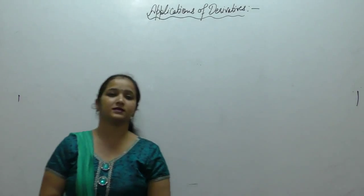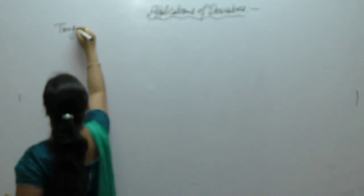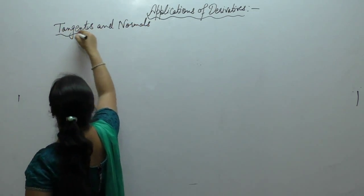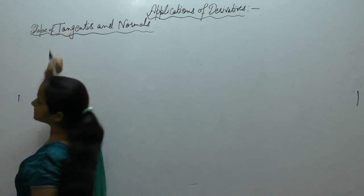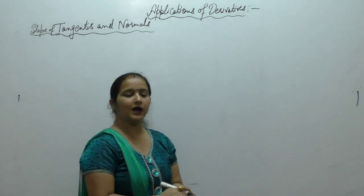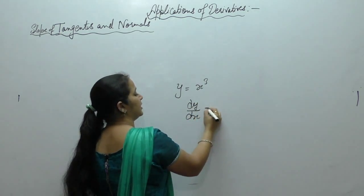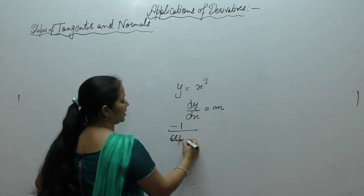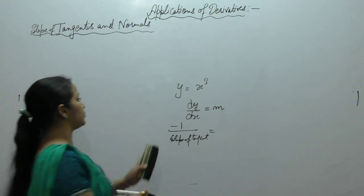Hello students, we are doing applications of derivatives. Today we are going to start the topic tangents and normals. In tangents and normals, we are going to start with the first topic: slope of tangents and normals. The formula for slope of tangent is dy upon dx, denoted by m, and slope of normal is minus 1 upon slope of tangent. Let us start with the questions now.